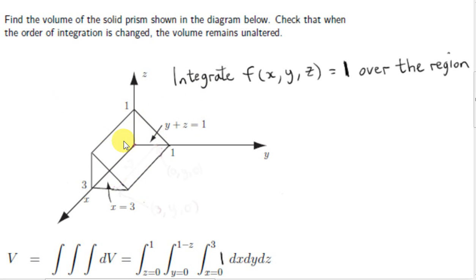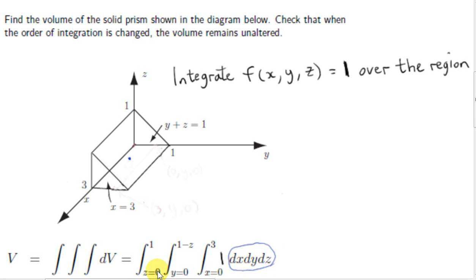We saw in a previous video that to get the volume of a region, we have to integrate this function over the region. This is the constant function 1. So for each point x, y, z in the region, the value of the function is a constant equal to 1. For each point in the region, we multiply 1 by a volume element. A volume element has volume dx dy dz — it's a tiny cuboid — and we need to sum all those cuboids over the entire region. So we're dealing with a three-dimensional region; that's why we have a triple integral, and our function has to be 1, because 1 times that volume element just gives us that volume.